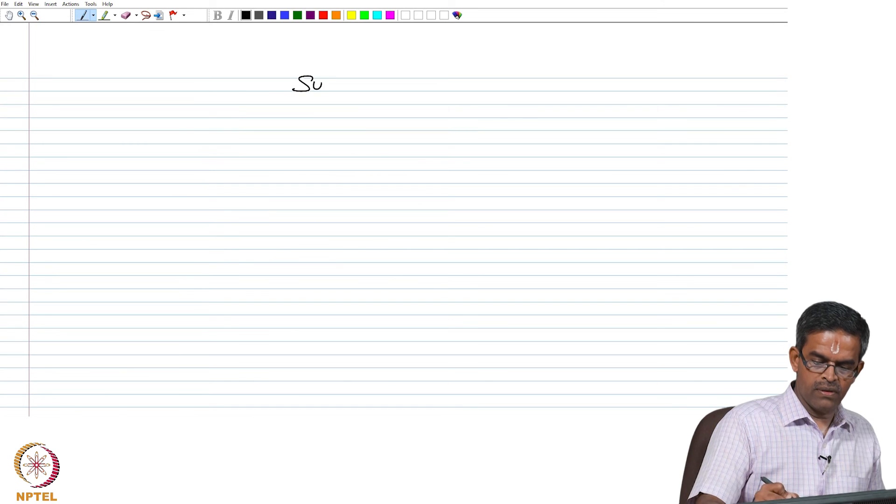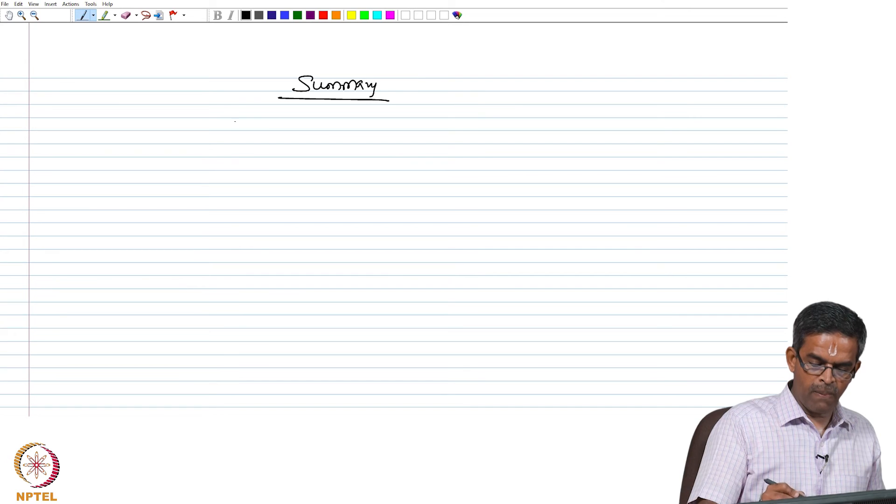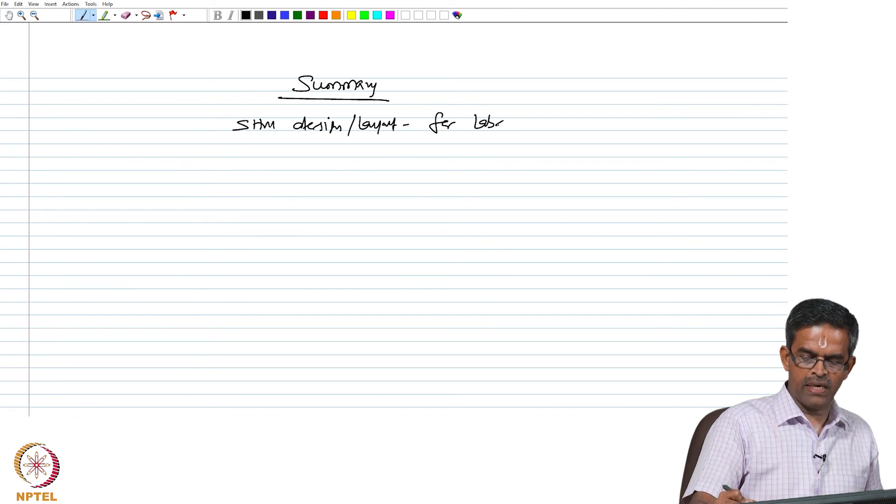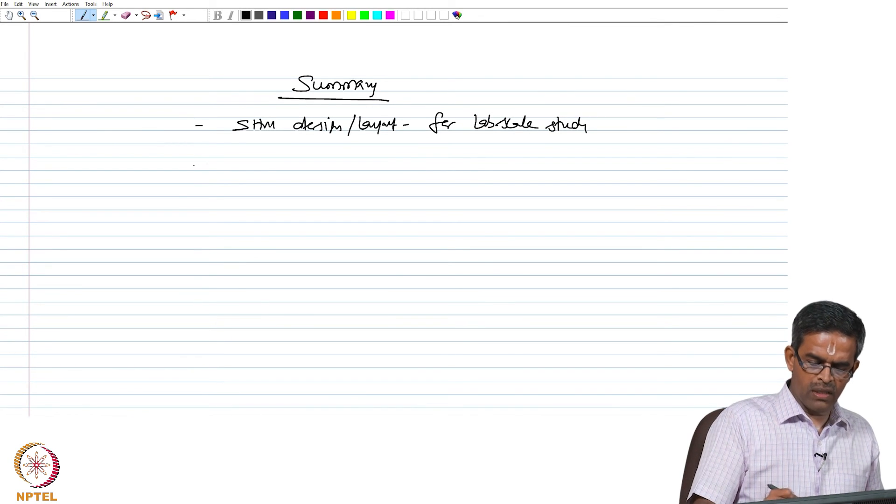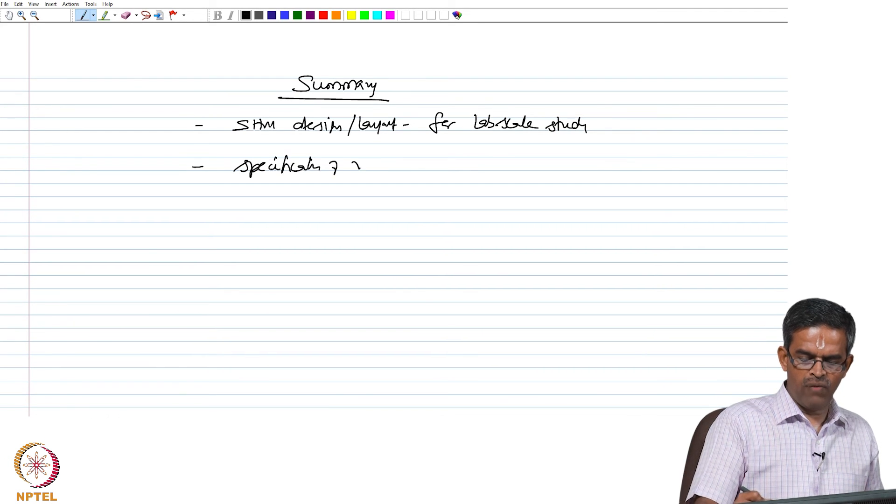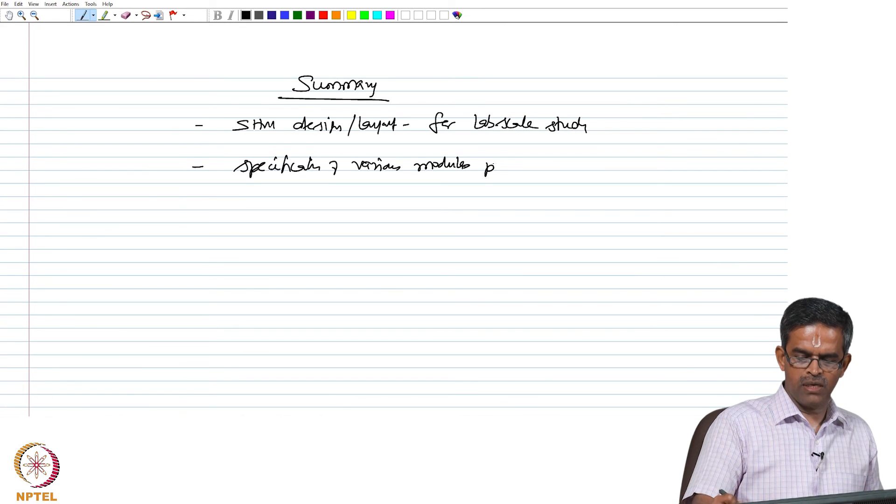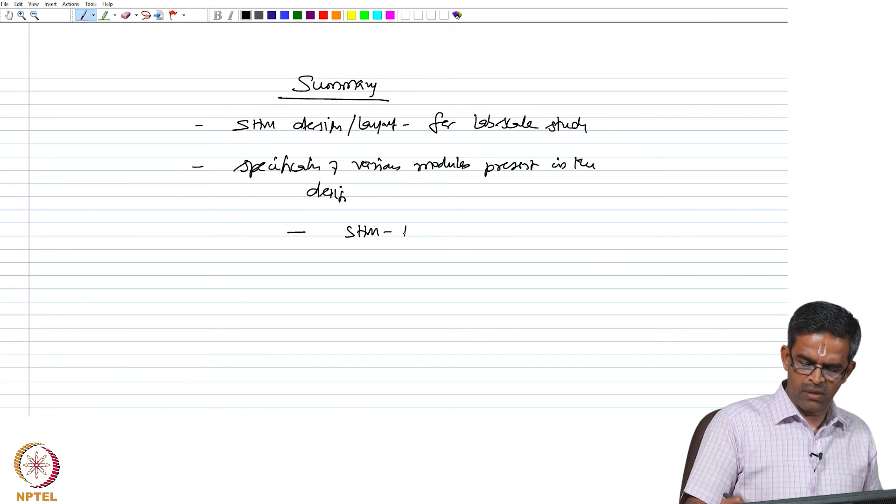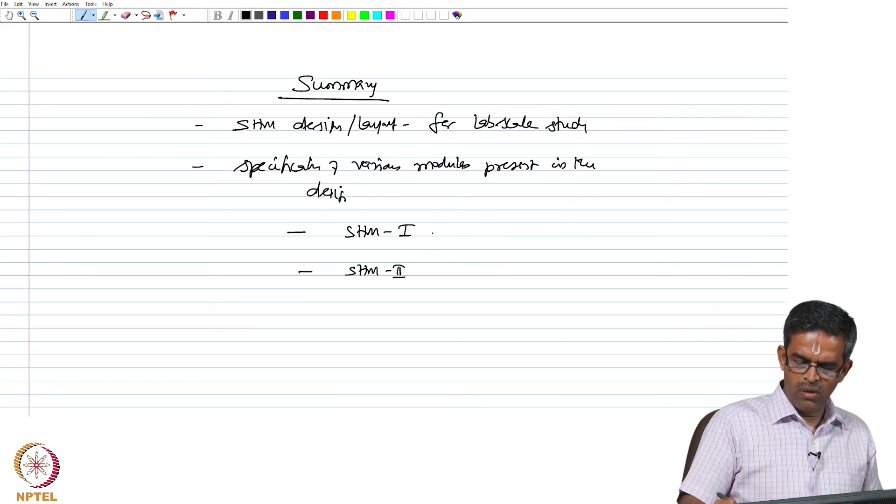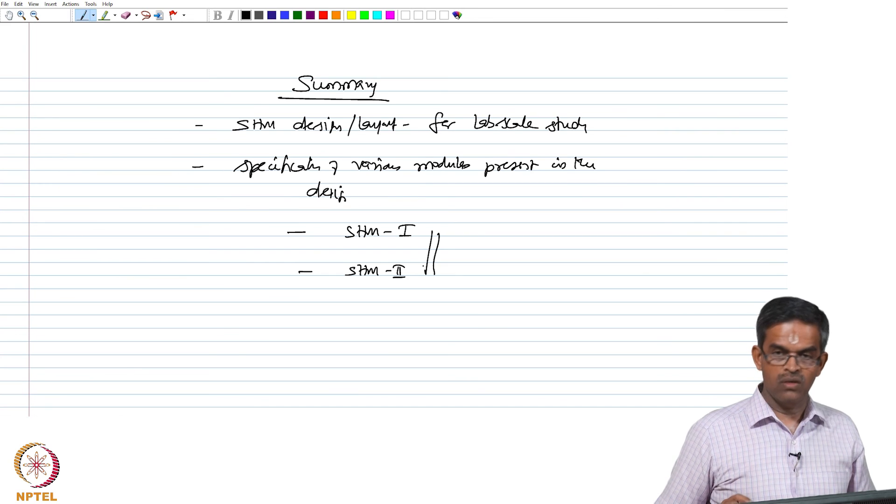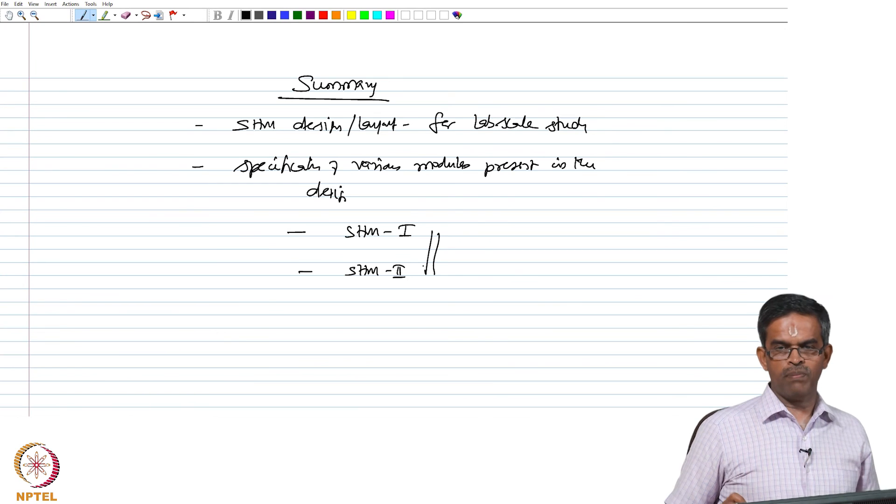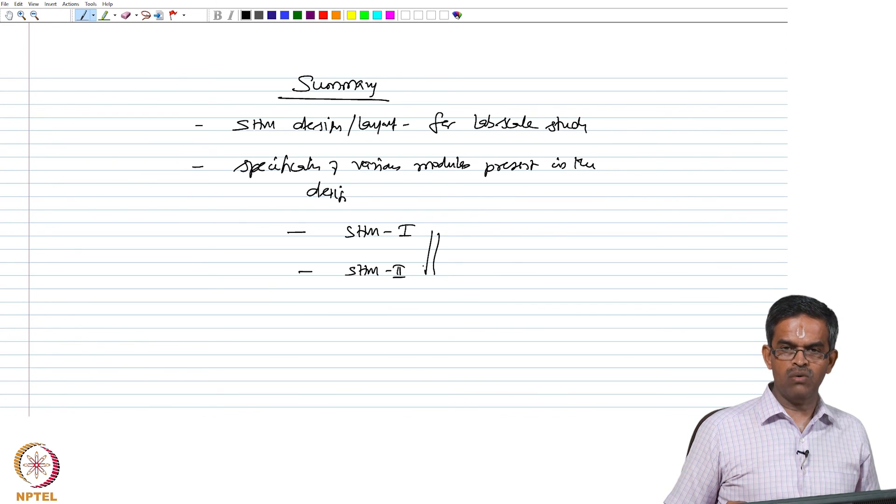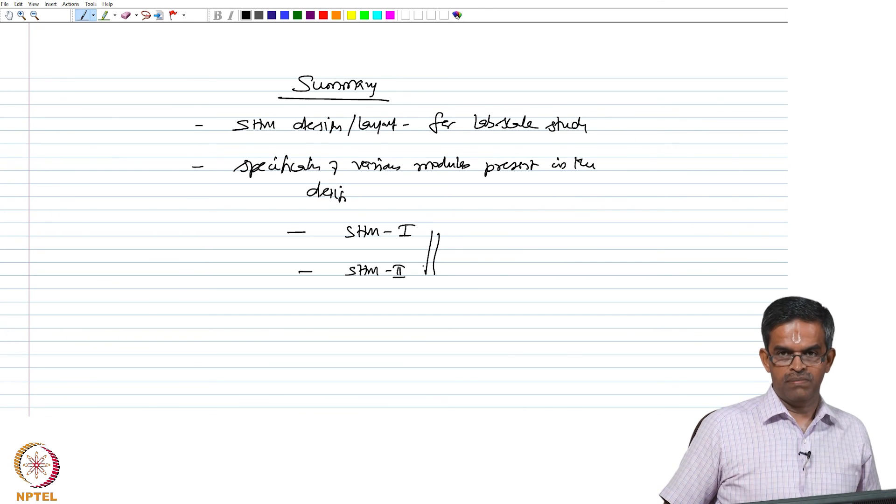In this lecture, we started introducing the structural health monitoring design and layout for a lab scale study. We are in the process of discussing detailed specifications of various modules present in the design. We are now having two modules, SHM design 1, which we are going to compare after we measure the responses using both wired and wireless sensors. We look forward to the next lecture which will talk about the experimental results and comparison, and the pitfalls of the proposed design of a system layout and how it has been improved. Thank you very much and bye.